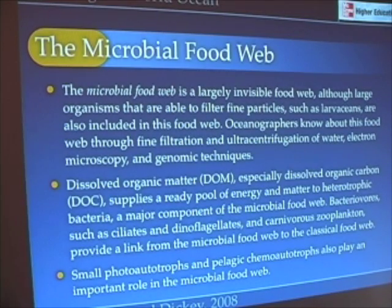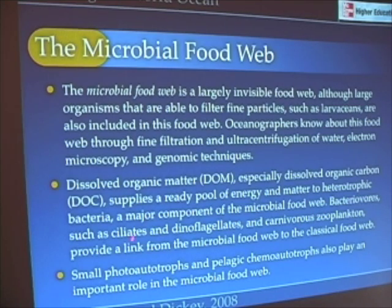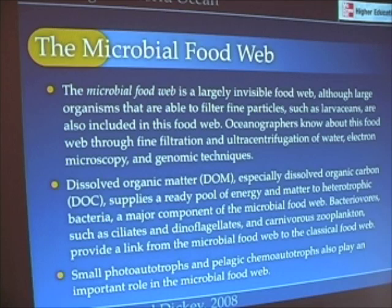The kinds of things we find in microbial food webs include bacterivores — things that eat bacteria — such as ciliates and even dinoflagellates. Ciliates are a type of small zooplankton; think of a protozoan with lots of hair. Carnivorous zooplankton that eat the ciliates and dinoflagellates are the actual link from the microbial food web to the classical food web. Other small photoautotrophs, such as cyanobacteria, also play a role in the microbial food web.